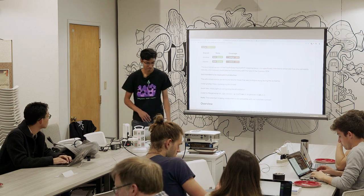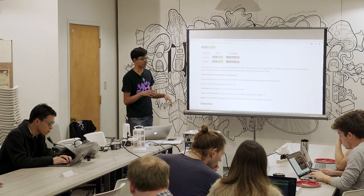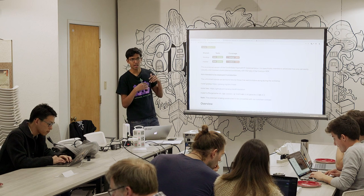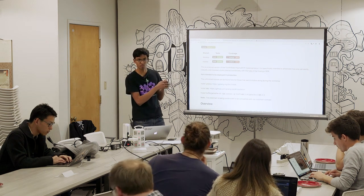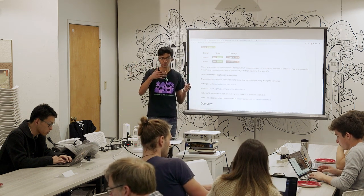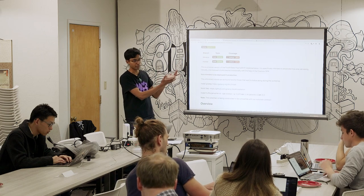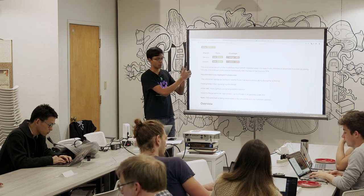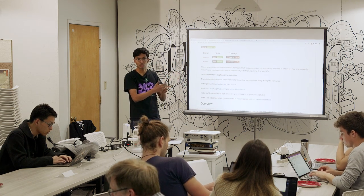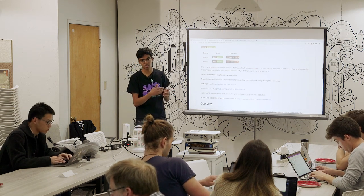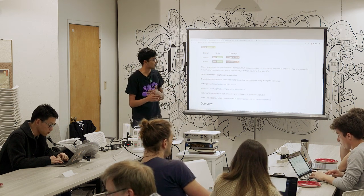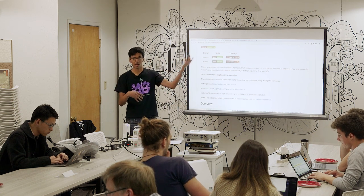I'll start with a brief explanation of how Plasma works. Plasma is a layer two scaling solution. It was originally intended for Ethereum, but it can work for any Turing complete blockchain. The way it works is that users deposit funds onto a root chain — in our case Ethereum. Once the deposit gets finalized, you can start spending your deposits on the sidechain where transactions go through much faster and with lower fees. Whenever you want, you can exit back onto the root chain.